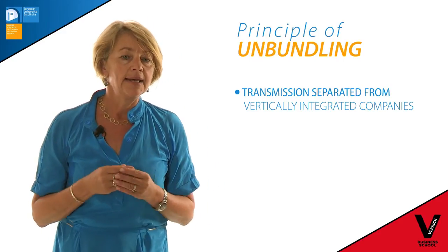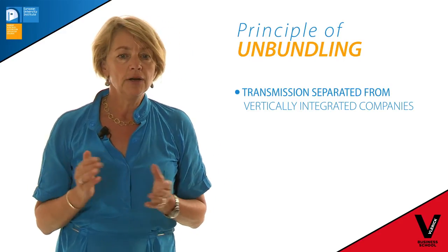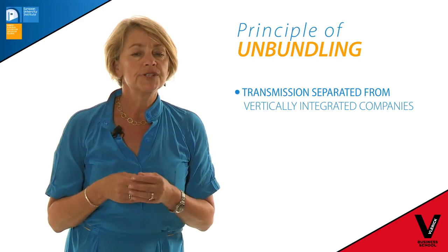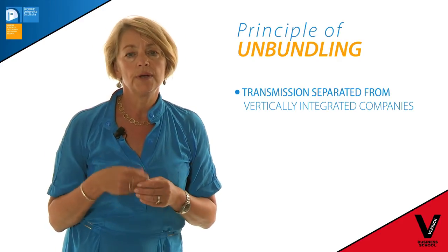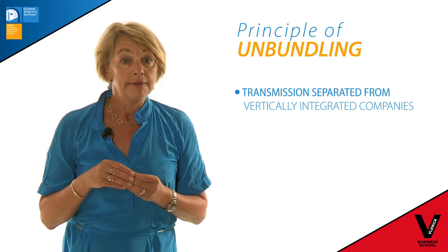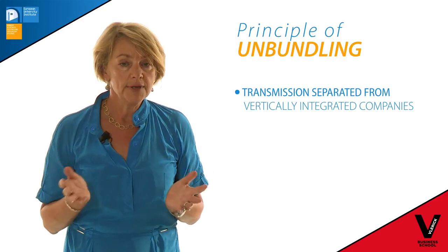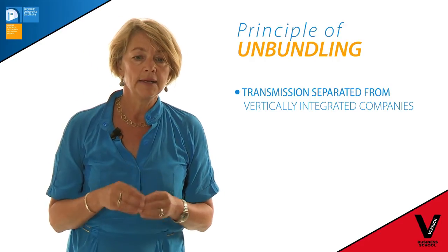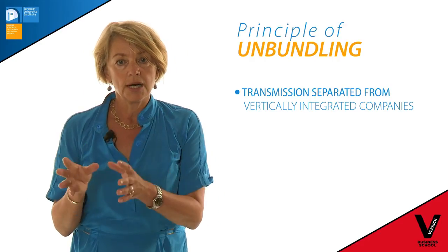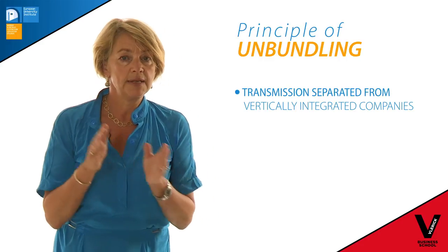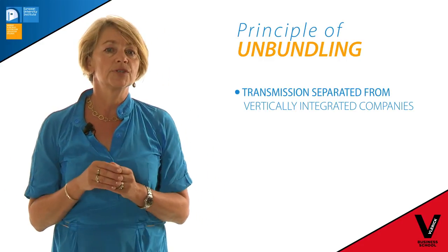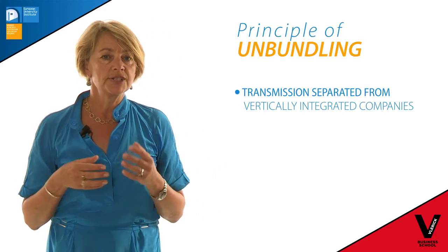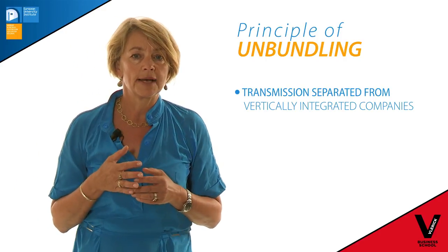So where, for example, a large company like EDF or EON would in the past be supplying electricity or gas but would also own and operate networks, pipelines and grids, in accordance with the principle of unbundling, the transmission part of these functions has to be separated out and operated independently.